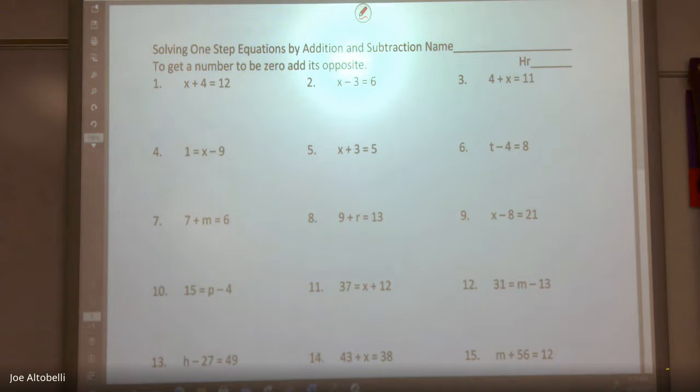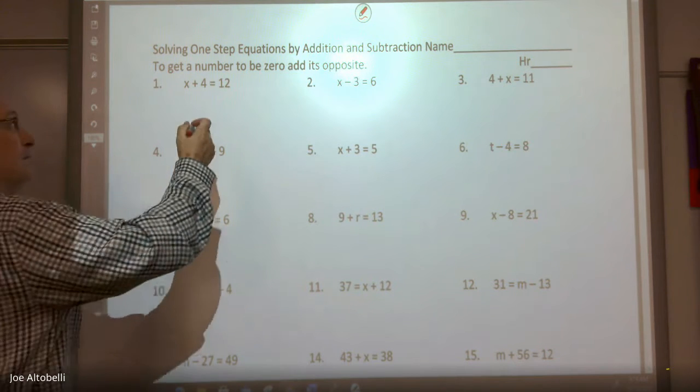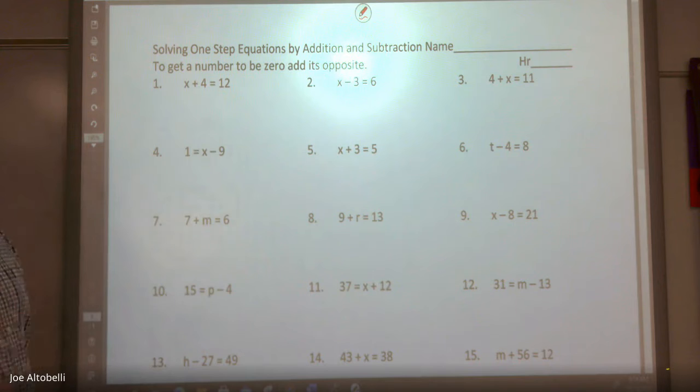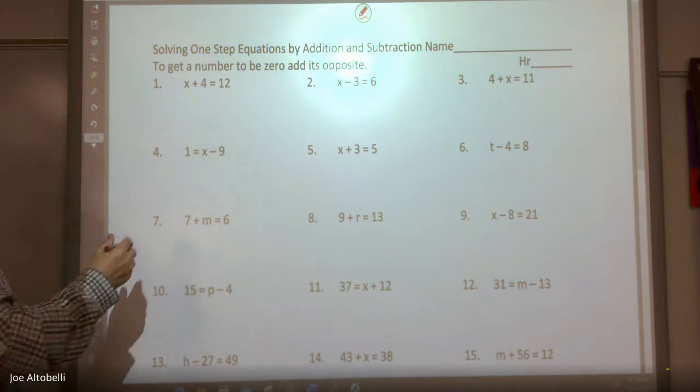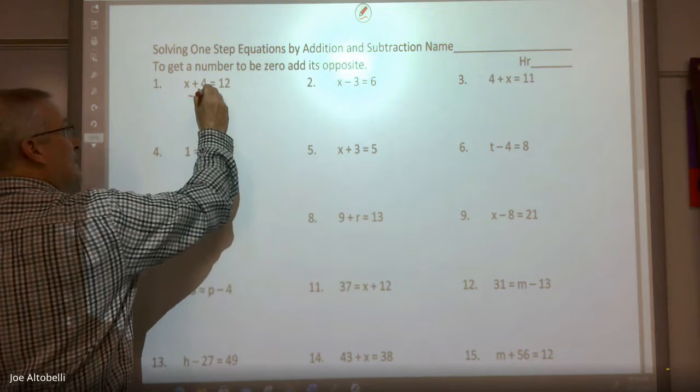I am going to always add, and the reason why I'm always going to add is because later on when you have positive and negatives, it's going to be easier if you're thinking adding. But what I'm going to add to 4 so I get 0 would be a negative 4. So I'm going to add a negative 4.